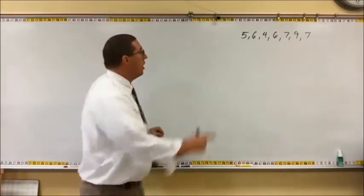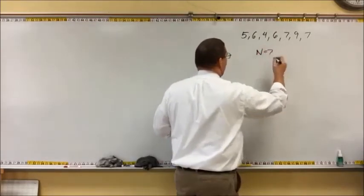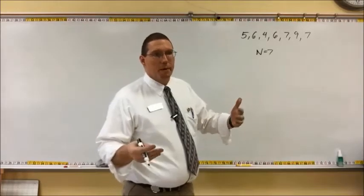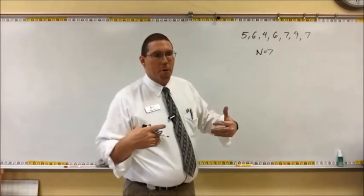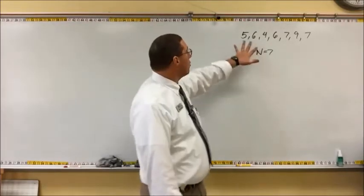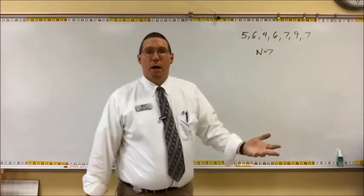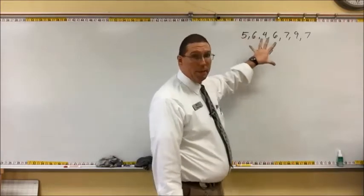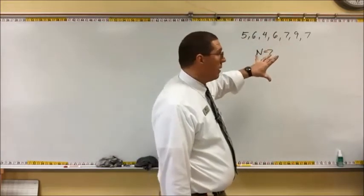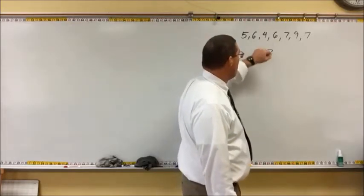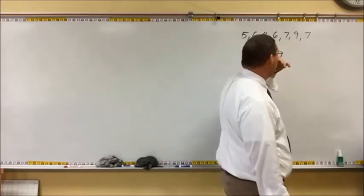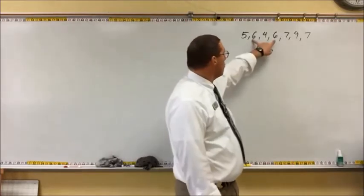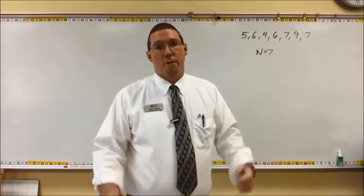Let's say that we have a population of 7, n equals 7. Whatever that quality is, it can be a lot of things — a measure of attitude, a measure of personality, a physical quality about a person, a quality about an animal. This could be the weights of 7 different animals of the same species. We just know that we have these 7 values: 5, 6, 4, 6, 7, 9, and 7. Now these two 7s, even though they're the same value, they're different units in the population. And these two 6s, even though they're the same value, they're different units in the population.